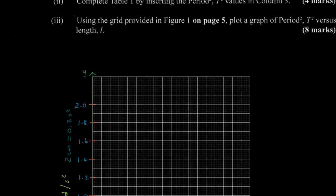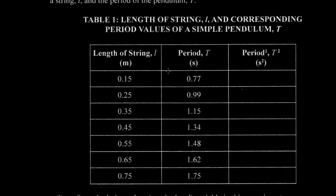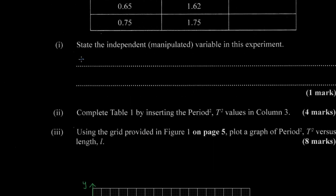We have the length and the period in the table. From theory, the length of the pendulum is what affects the period — as we change the length, we expect the period to change as a result. Therefore, the manipulated variable, or independent variable, is the length of the string.